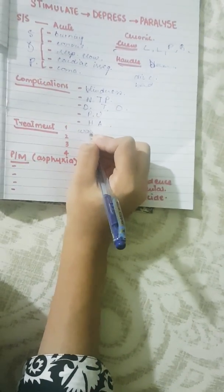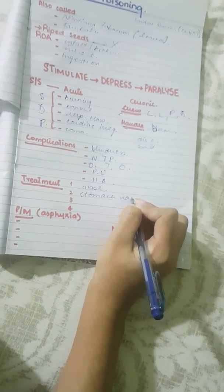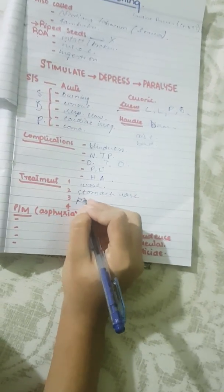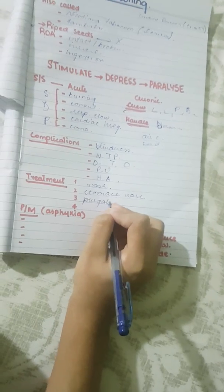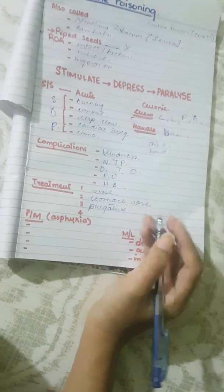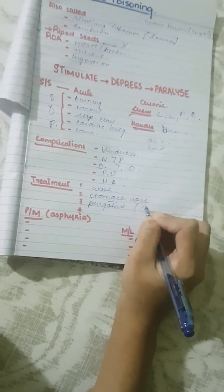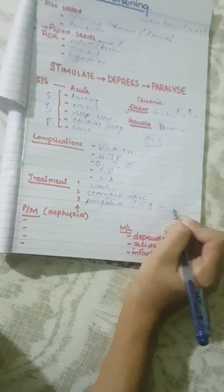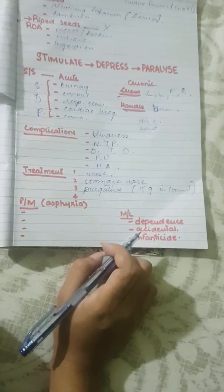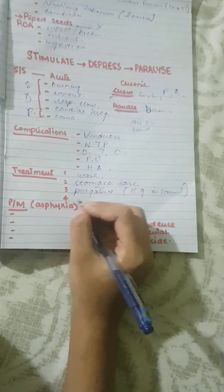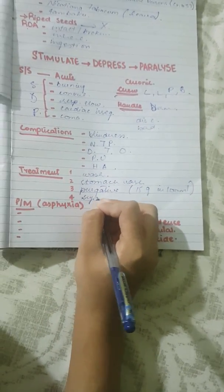Treatment includes washing with soap if handled. If ingested, perform a stomach wash. Then give the patient a purgative, mostly sodium sulfate at a dose of 15 grams in 100 ml water. Further treatment may be symptomatic.